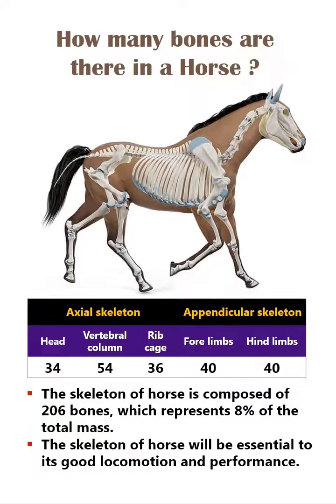The skeleton of the horse is composed of 206 bones, which represents 8% of the total mass. These bones organize the framework of the head, neck, trunk, and the limbs of the horse, with the specific number as illustrated in the table. The skeleton of the horse will be essential to its good locomotion and performance.